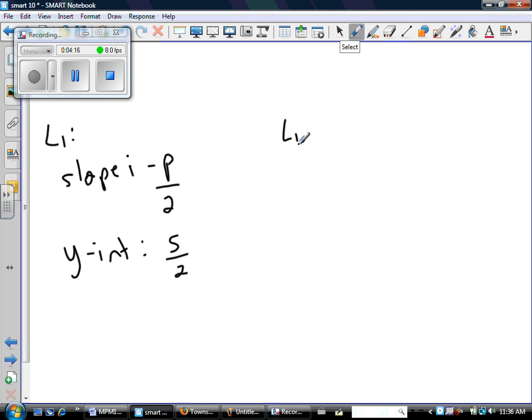So line two has a slope of negative 3 over q and a y-intercept of 20 over q. So, again, pardon the fact that it's so messy.